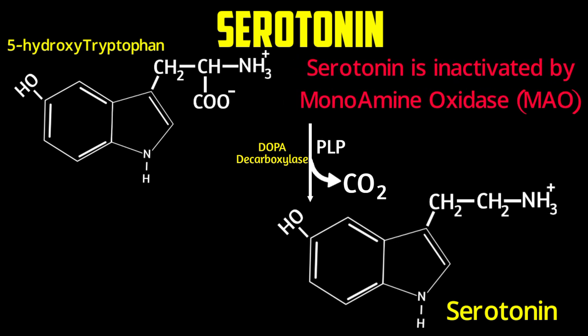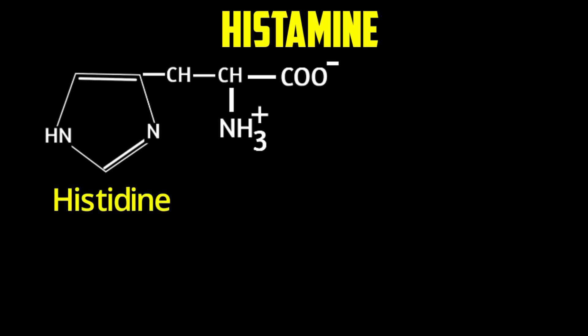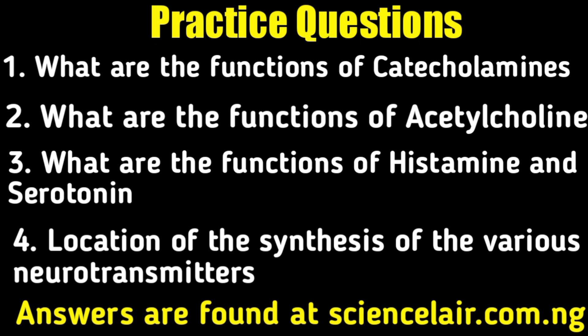Serotonin, like catecholamine neurotransmitters, can be inactivated by monoamine oxidase. Histamine causes allergic and inflammatory responses within the brain. It is produced by mast cells and certain neuronal fibers, and is synthesized from histidine in a single enzymatic step by histidine decarboxylase, which requires PLP — a mechanism very similar to DOPA decarboxylase. Histidine loses CO2 to form histamine.